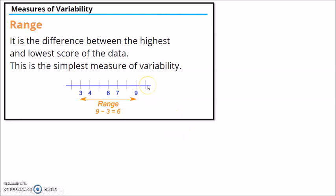So when we say the range, it's the simplest measure of variability. It's just the difference between the highest and the lowest score of the data. So here, this is the simplest measure of variability. So the highest, you just subtract the lowest. So it simply tells us how far the lowest is from the highest score.